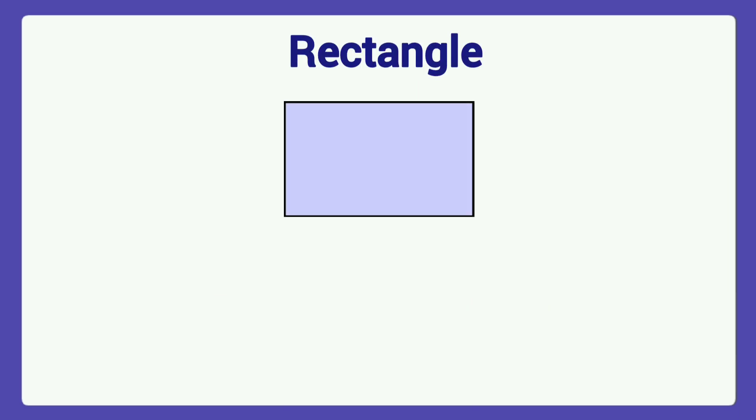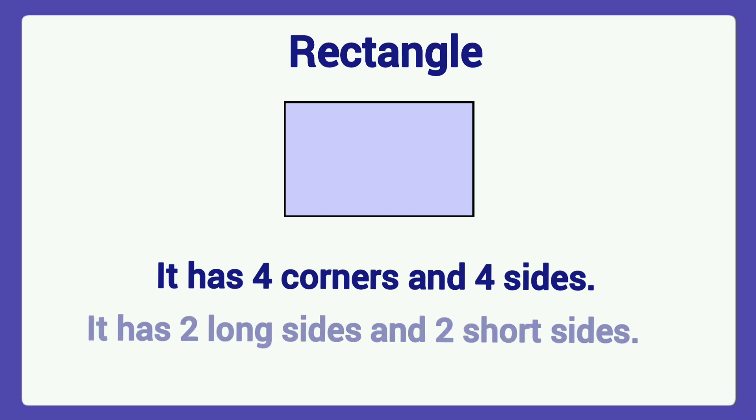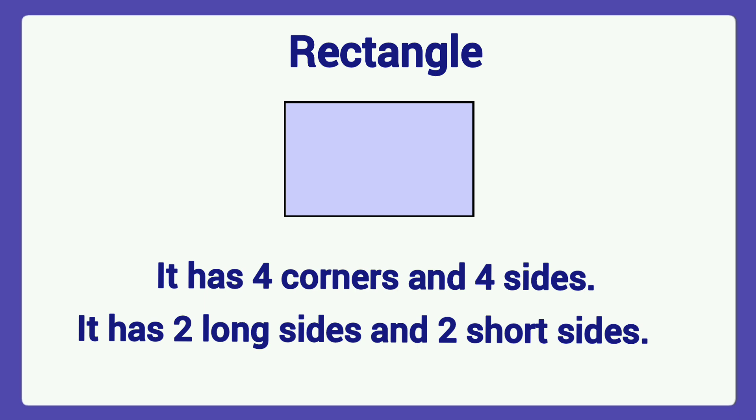Next one, this is a rectangle. It has four corners. It has two long sides and two short sides. Its opposite sides are equal.